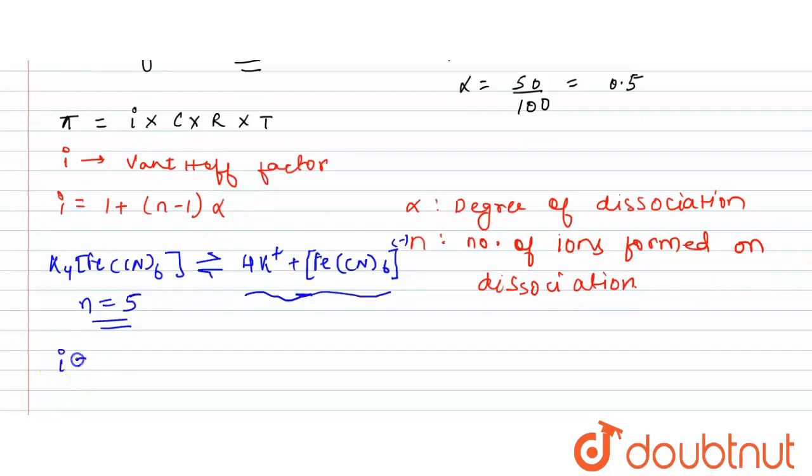So now we will write down the value of i equals 1 plus (n minus 1), that is (5 minus 1) times alpha, which is 0.5. So finally this is 1 plus 4 times 0.5. This value will come out to be 3.